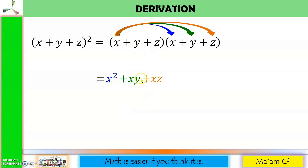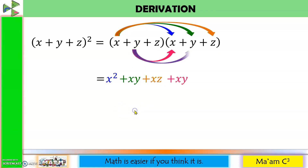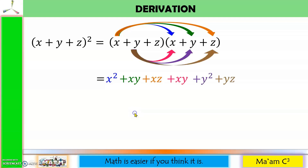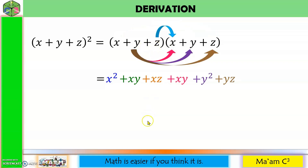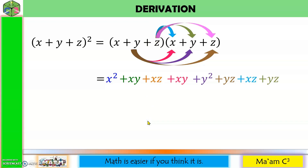Let us distribute y: y times x is xy, y times y is y squared, and y times z is yz. Now let us distribute z: z times x is xz, z times y is yz, and z times z is z squared.